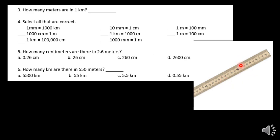In between the centimeters are the millimeter marks. It's kind of hard to see, but there are 10 little marks between every single centimeter. So if there are 100 centimeters and 10 millimeters between each of those centimeters, 10 times 100 equals 1,000. So 1,000 millimeters are in a meter stick — there are 10 millimeters in a centimeter, but 1,000 millimeters in a meter.